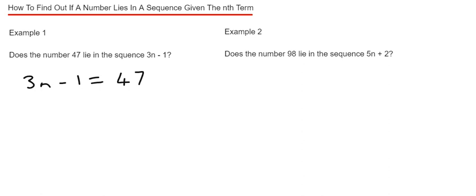And what we're going to do now is just solve this equation. So if we add one to both sides, that will give us 3n equals 48. And then if we divide by 3...